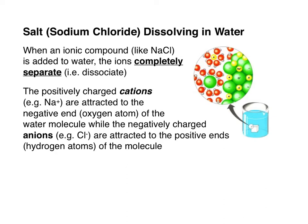The negative end of the water molecule is pointed towards the positively charged ion because of the oppositely charged regions of the water molecule. The positive side of the water molecule is attracted to the negatively charged chloride ion. Over time, these water molecules — vastly outnumbering the individual ions — break apart the crystal and generate individual ions floating in solution.